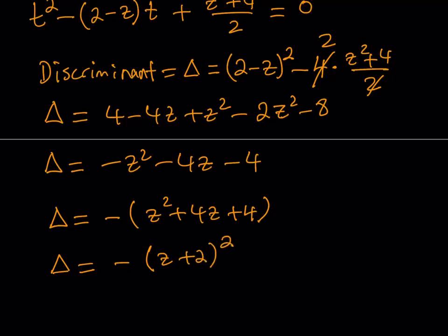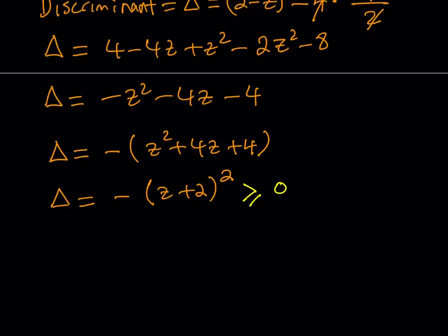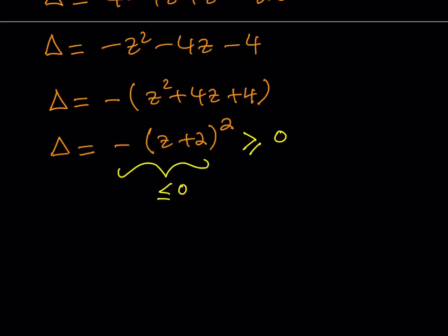If we're looking for real solutions, the discriminant needs to be greater than or equal to zero — otherwise we get complex solutions. But negative (z plus 2) squared is always less than or equal to zero since it's a perfect square with a negative in front. The intersection of these two conditions means the discriminant must equal exactly zero. So we have negative (z plus 2) squared equals zero — this is a must, otherwise we won't have real solutions.